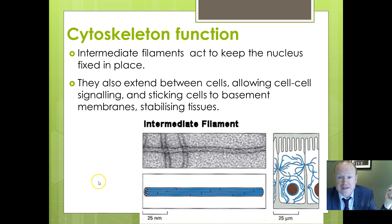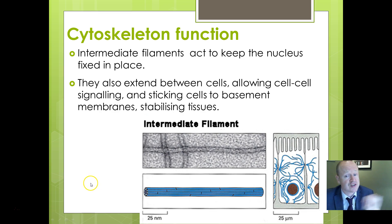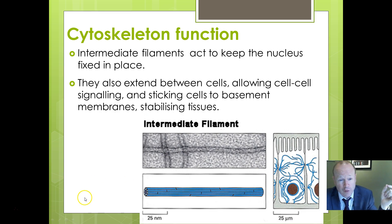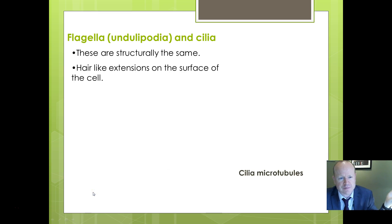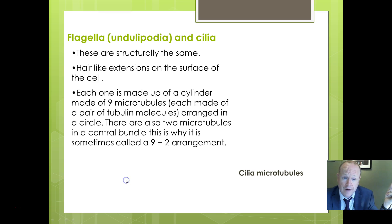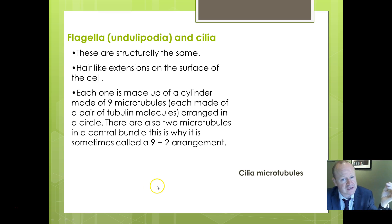Intermediate filaments help anchor the nucleus, keeping it firmly in place. They can also extend between cells, helping to hold cells together and allowing information to pass from one cell to another, thereby providing communication between cells.